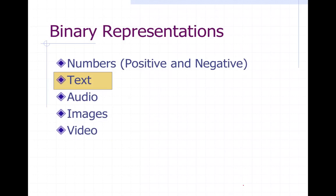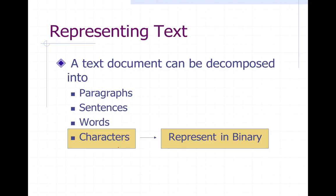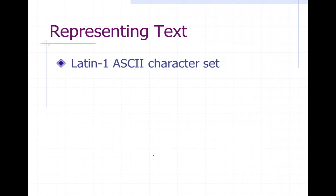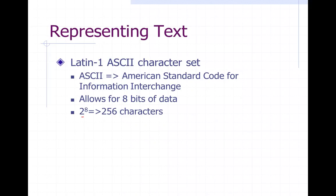Next, we'll talk about how to represent text. A text document can be decomposed into paragraphs, sentences, words, and characters — and characters are the smallest unit, so that's what we're going to represent in binary. There's an ASCII character set that the entire world has agreed on to represent every single character in English-based language. It stands for American Standard Code for Information Exchange and allows for eight bits of data — two raised to the eight means there's space for 256 characters.